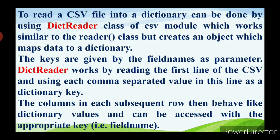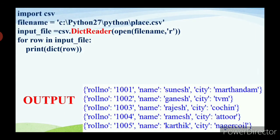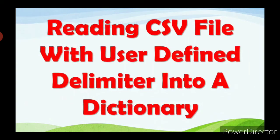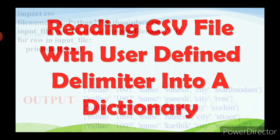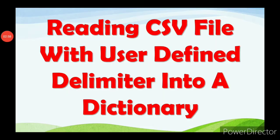The columns in each subsequent row can be accessed with the appropriate key, which is the field name. The main difference between csv.reader and the dictionary reader is explained in simple terms.